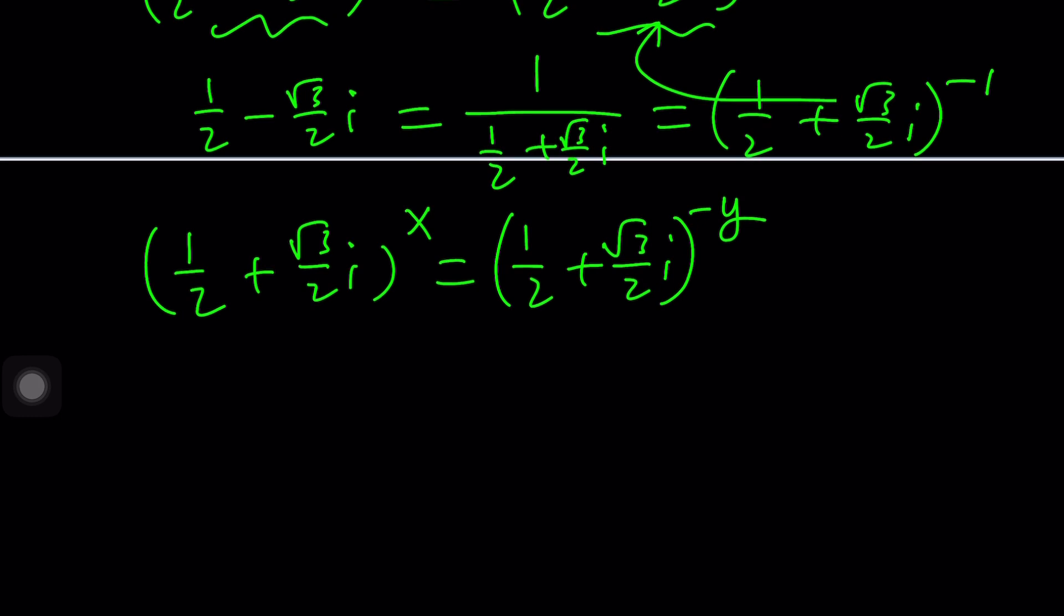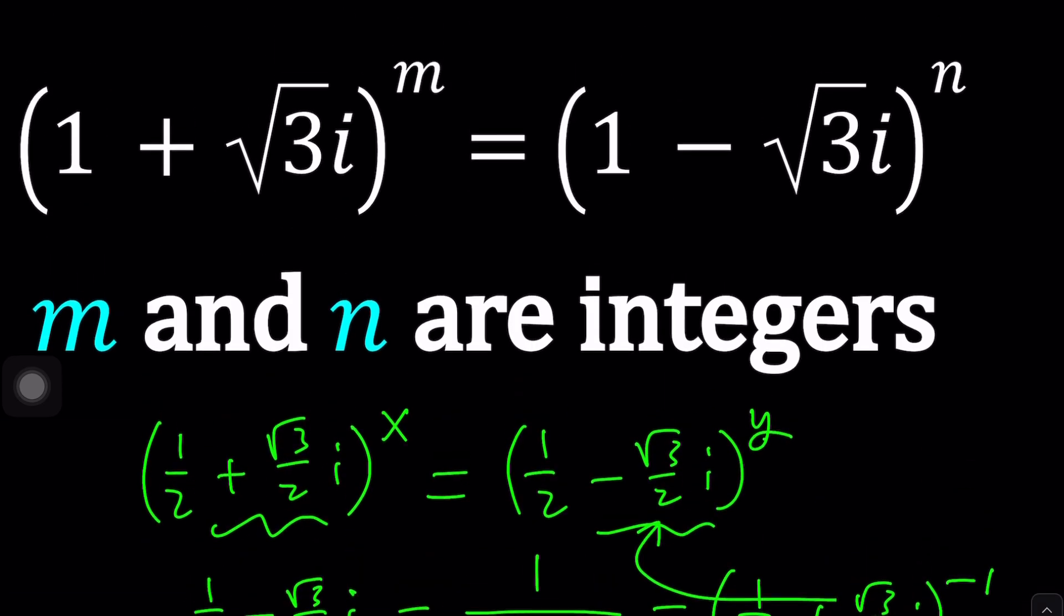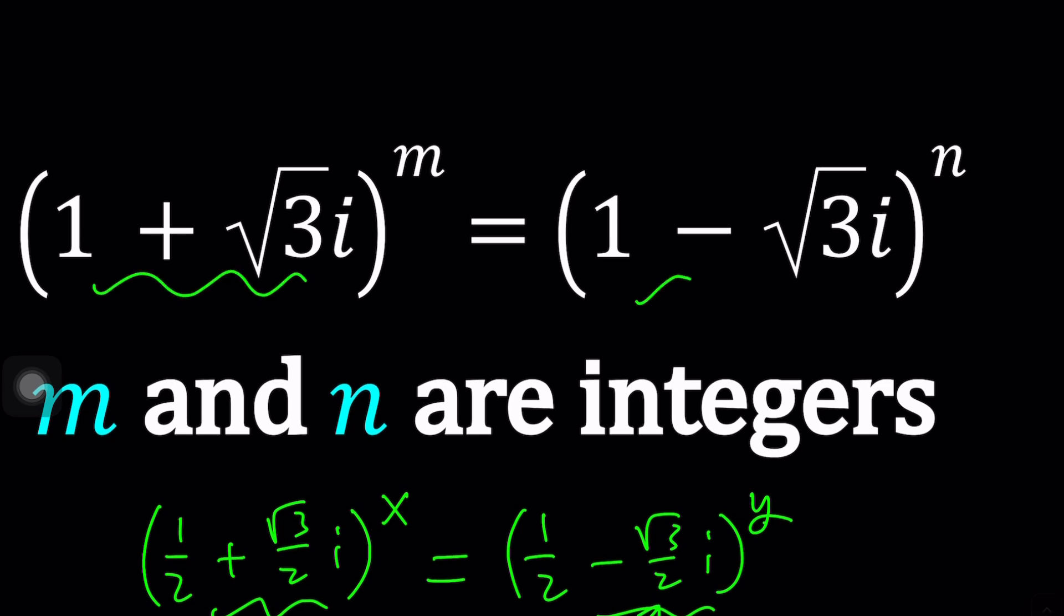But anyways in this scenario you probably noticed that solution will be fairly easy because we have the same base. But we don't have that luxury here. They are different and they're not reciprocals. So what do we do then?